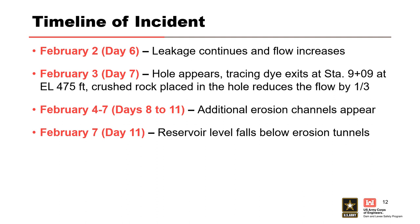Leakage continued to increase and flow was measured at 18 CFS. The discharge point at station 9+09 climbed to elevation 478 and exploratory drilling from the crest began. On the next day, a hole appeared on the upstream face at station 2+12 at elevation 485. Tracing dye placed at the upstream entrance exited the downstream face at station 9+09 at elevation 475 approximately 13 minutes later. Crushed rock was placed in the hole, reducing the flow by one-third. Over the next three days, additional upstream erosion channels appeared over several hundred feet at approximately elevation 485. Finally, the reservoir level began to fall below the upstream erosion tunnels, essentially stopping leakage and arresting the potential failure mode development.